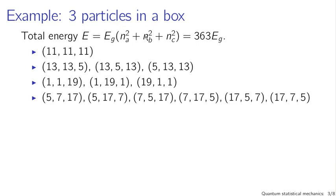The energy of each particle in a box is given by a quantum number — n sub a, n sub b, or n sub c for each of the three particles — and the energy is essentially the sum of the squares. There's some ground state energy, the 1-1-1 energy. These are three one-dimensional particles and their energies sum accordingly. Using Griffiths' example, what if the total energy is 363 times the energy of a single particle? You can make 363 in many ways: 11² + 11² + 11², or 13² + 5² + 13², or 5² + 7² + 17², etc.